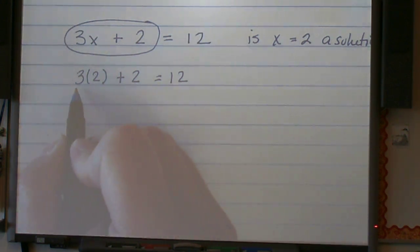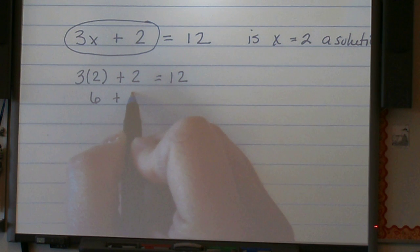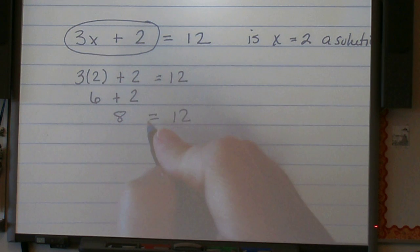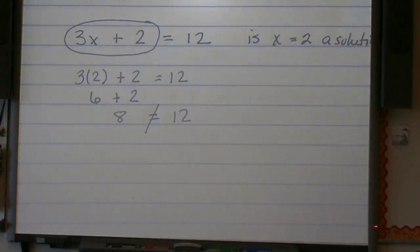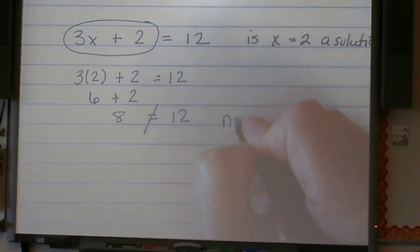So I have 3 times 2 plus 2 is equal to 12. I now simplify. 3 times 2 is 6 plus 2, and 6 plus 2 is 8, equals 12. 8 is not equal to 12. So therefore, no, x equals 2 is not a solution.